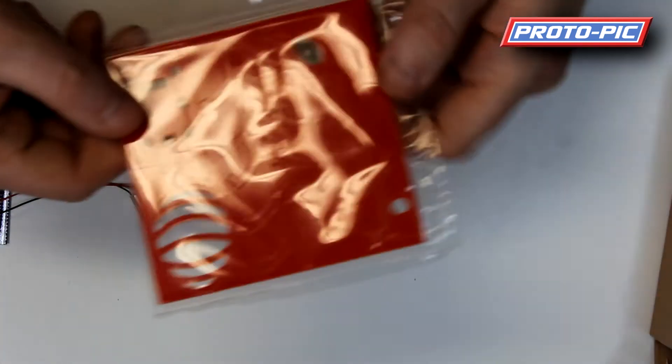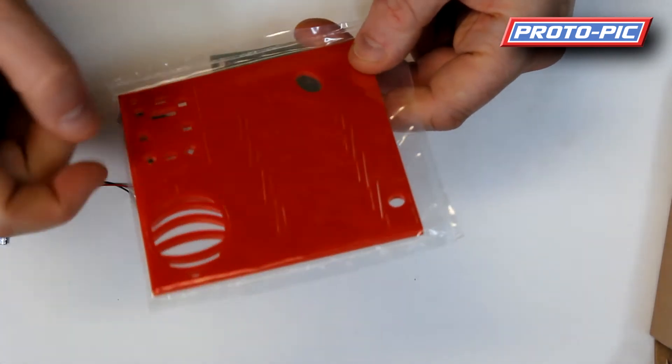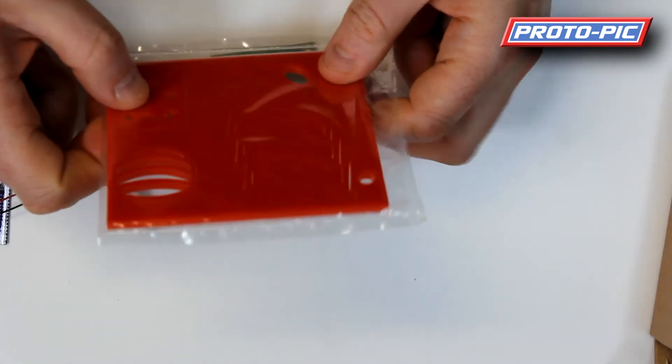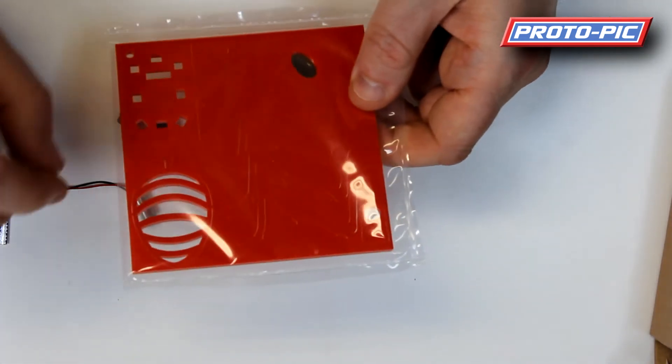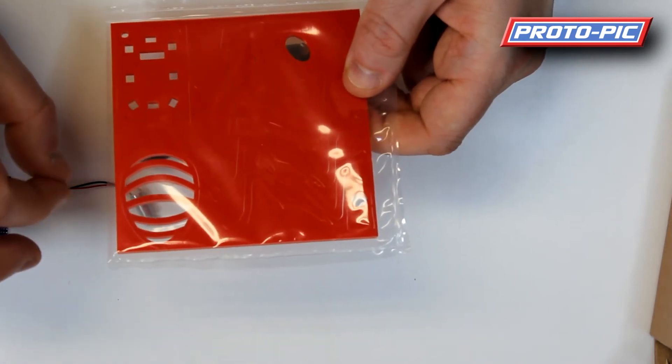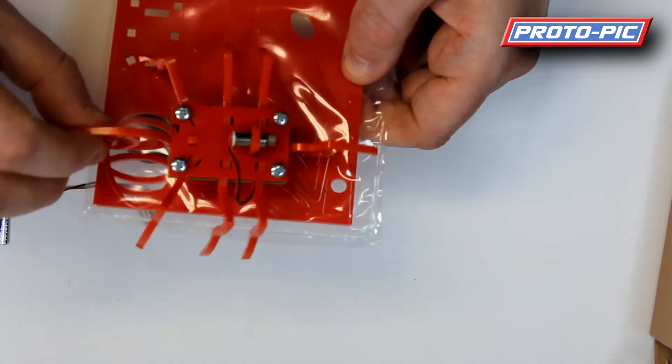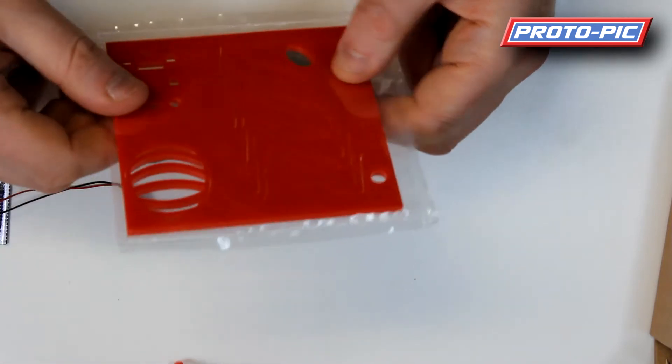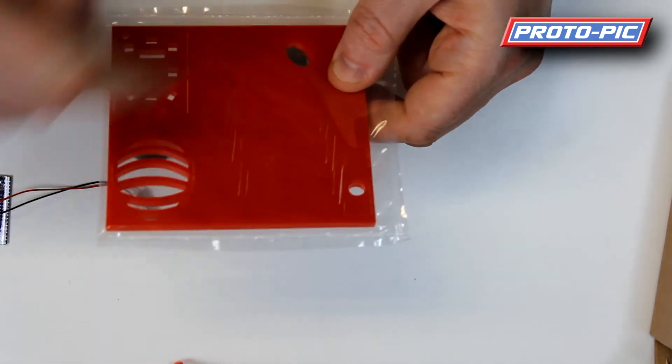You also get this sheet of acrylic. You can see it's all pre-cut and you just push them out very carefully. The acrylic is very fragile and if you over tighten these screws you can crack the acrylic and that's why we include some extra legs.